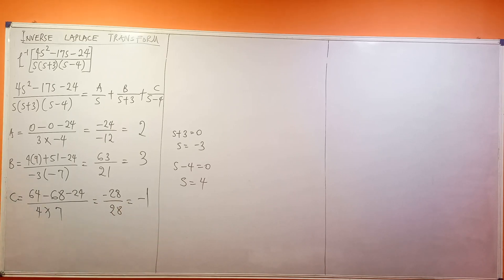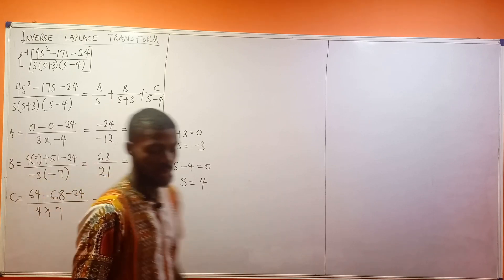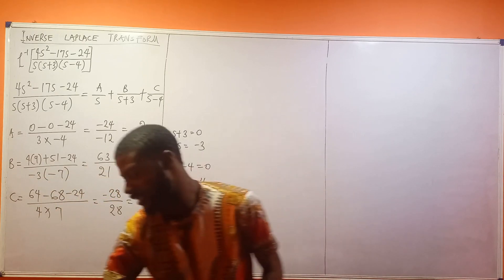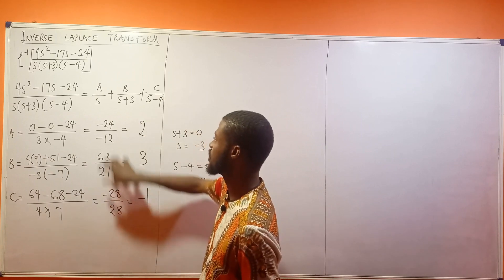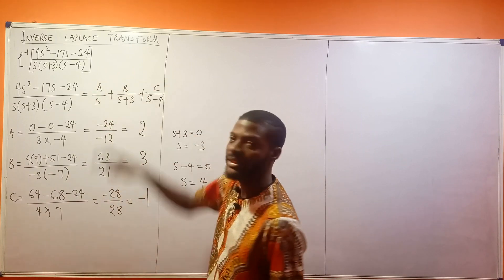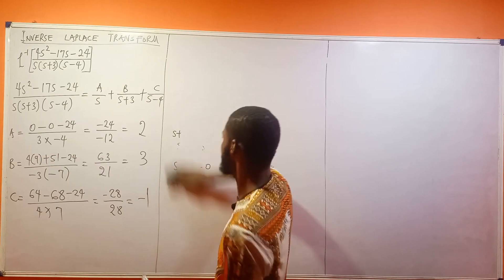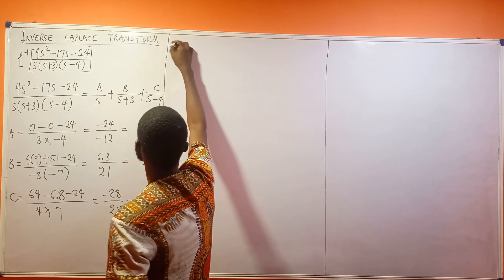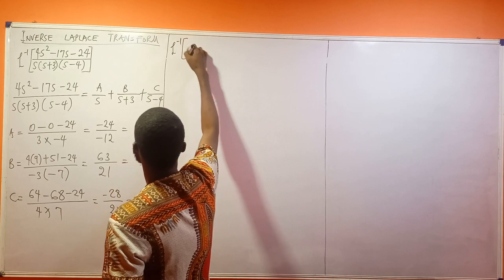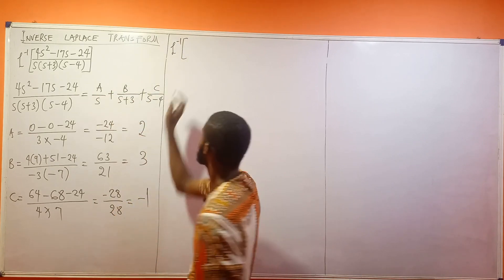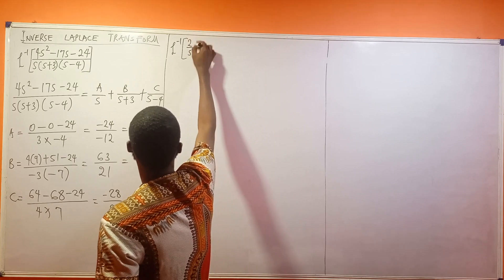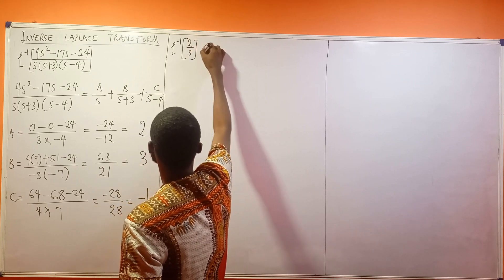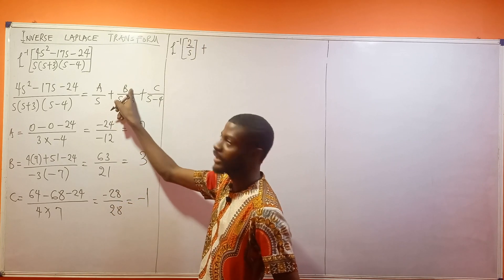Right now, these results that we have gotten, we're going to find their inverse Laplace transform after substituting the values into their partial fraction component. This would be the inverse Laplace transform of A over s. What was our A? 2. So this is 2 over s.